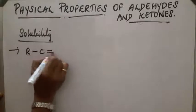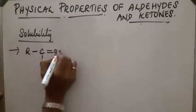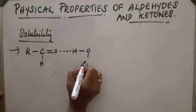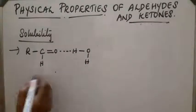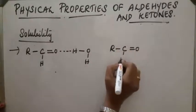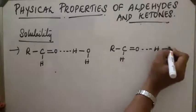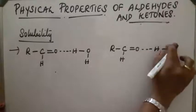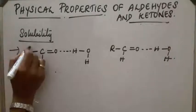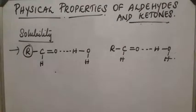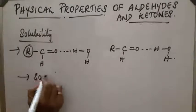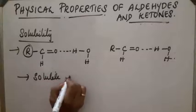The carbonyl C=O can form hydrogen bonding with water. In the case of ketones also, they can form hydrogen bonding. So lower members are soluble in water. As the alkyl part increases, solubility decreases. They are also soluble in organic solvents.